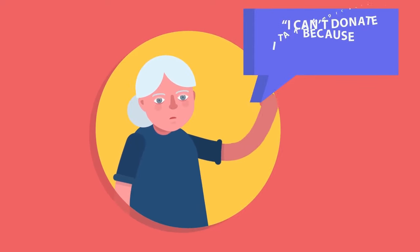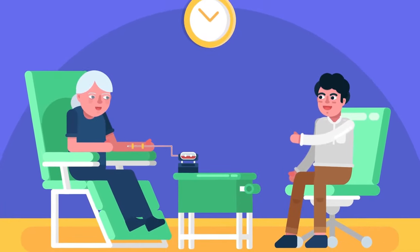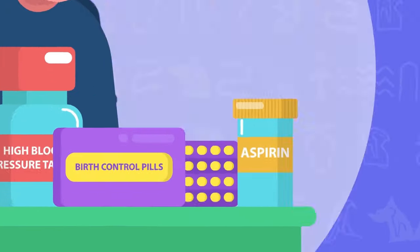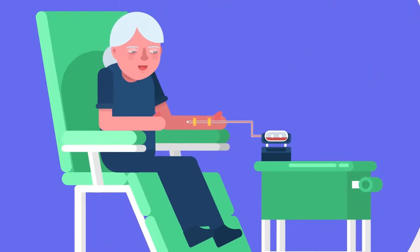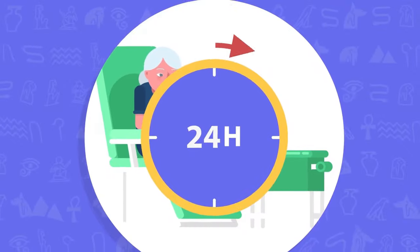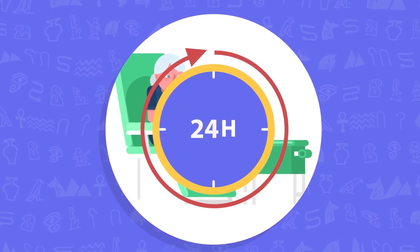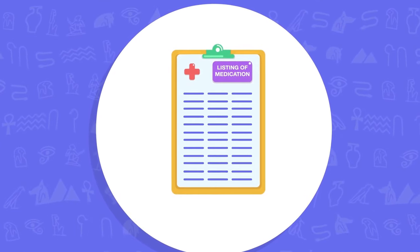I can't donate because I take medication. Most medication will not disqualify you as a blood donor. You may donate if you take aspirin, birth control pills or high blood pressure medications. You may donate 24 hours following your last dose of antibiotics and are symptom-free. We can provide a complete listing of medication deferrals upon request.